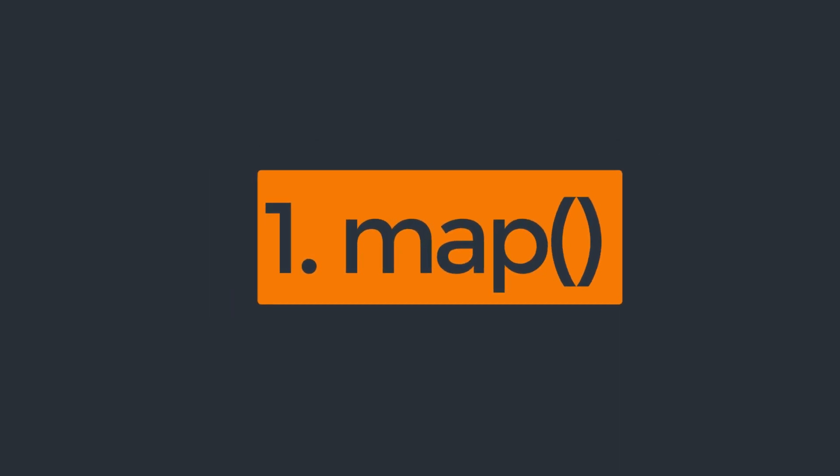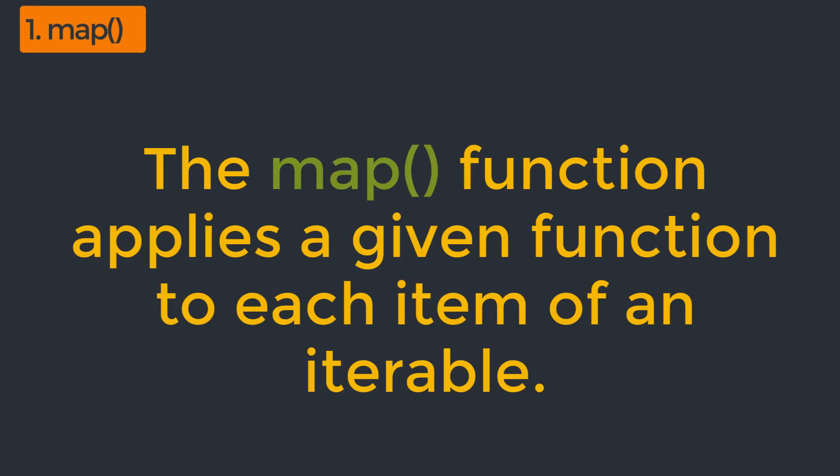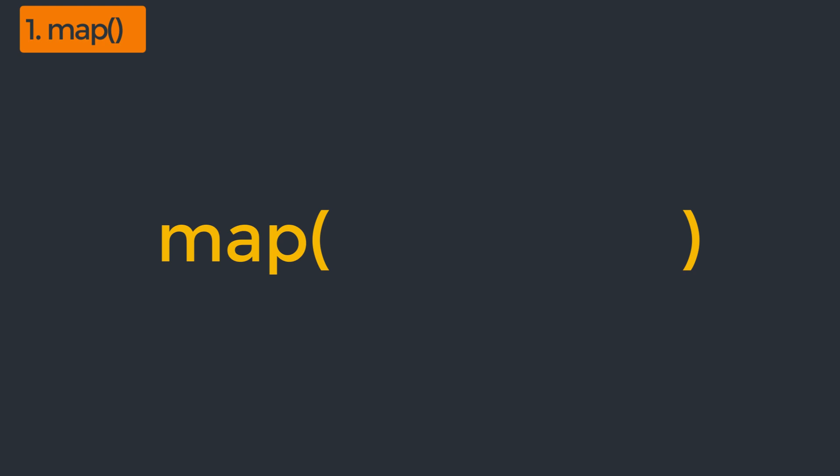The very first function is the map function. The map function applies a given function to each item of an iterable, which can be a list or tuple, and returns a list of the results. The syntax of the map function is simply map. Inside this function, we can pass two different parameters. The first parameter is the function which we want to apply for each item of that particular iterable, and the second parameter is the iterable on which we have to apply that function. The map function returns a list of the results.